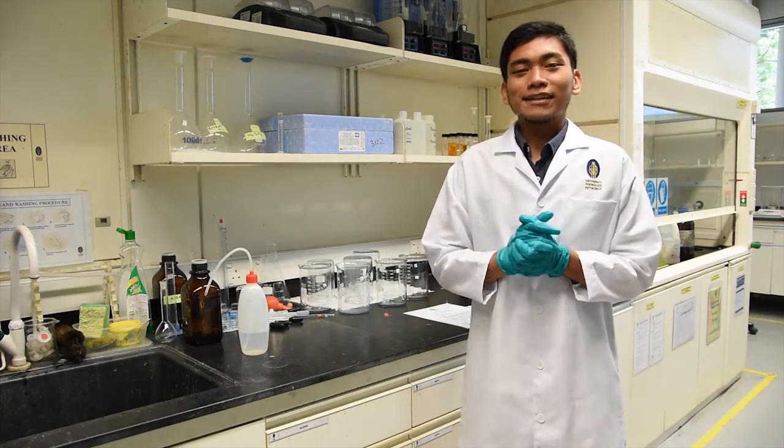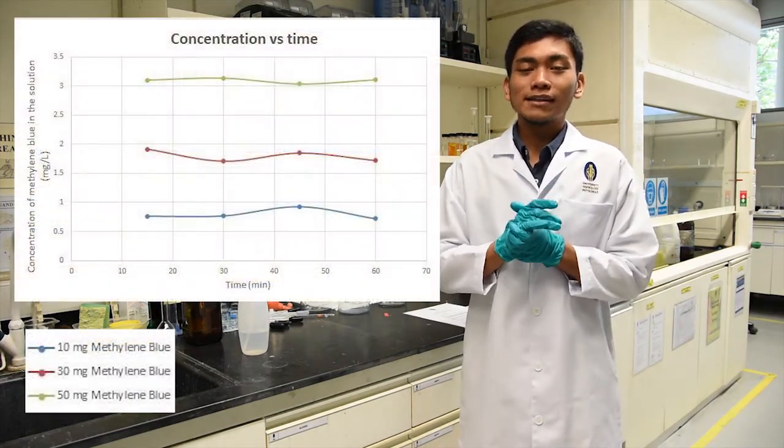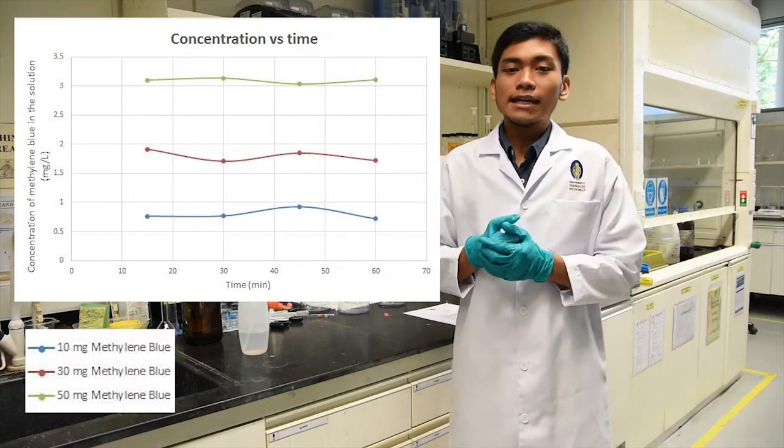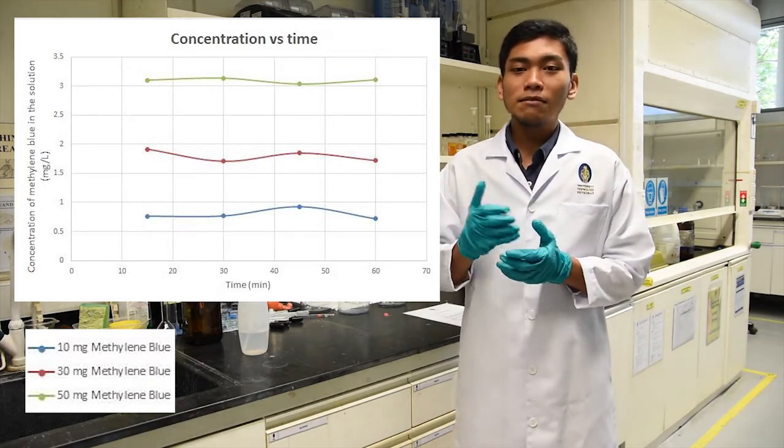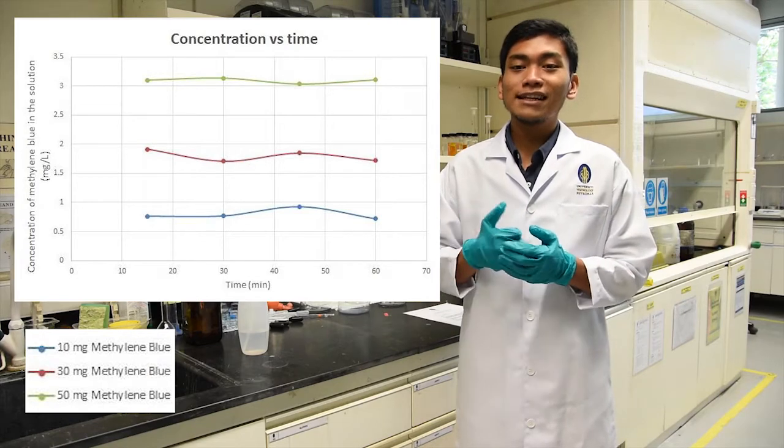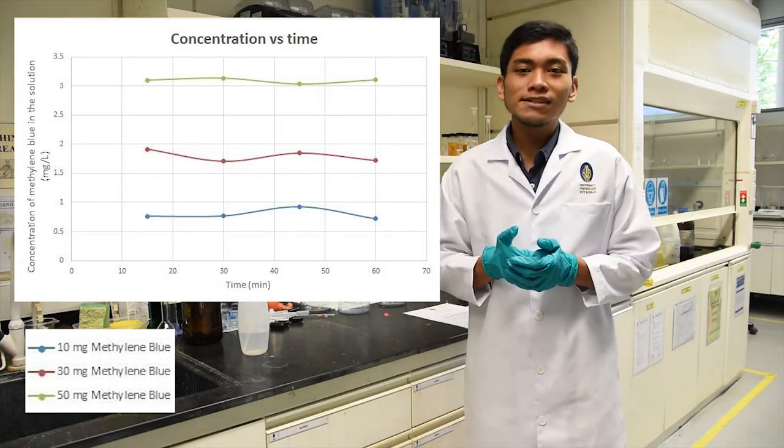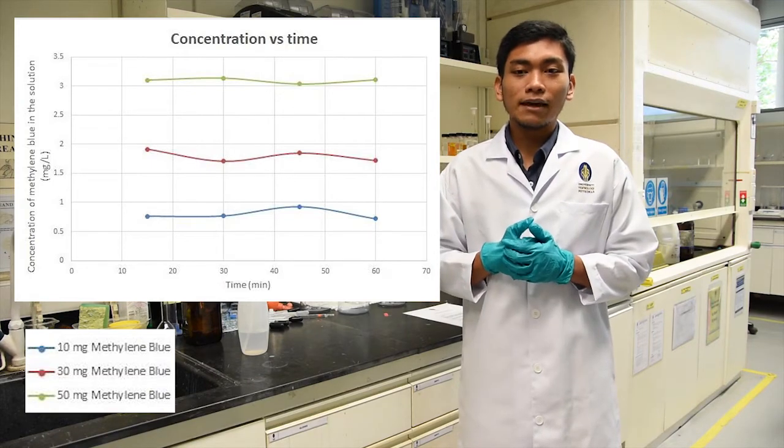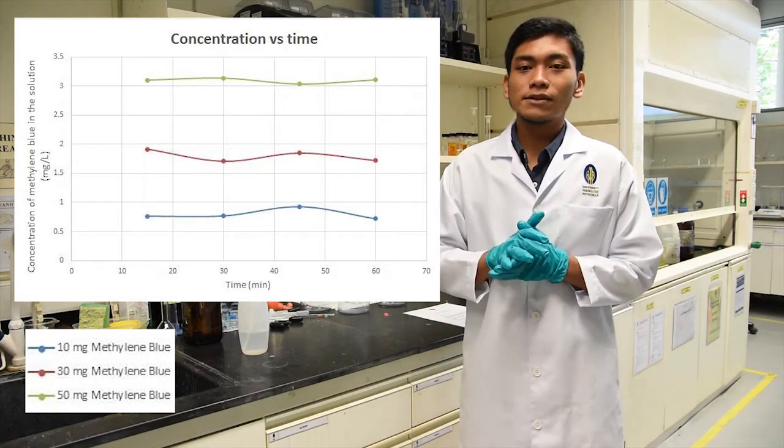The second graph is about concentration of methylene blue left in the solution versus time. Based on the graph showed, it can be observed that the methylene blue in all of the solution are significantly removed in the first 15 minutes of the reaction, which is shortly followed by the constant amount of methylene blue left in the solution throughout the rest of the experiment.